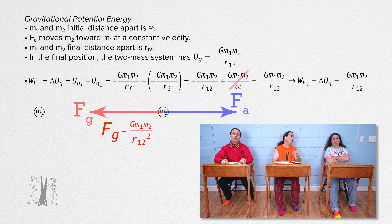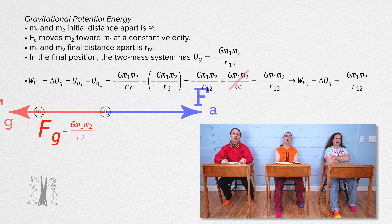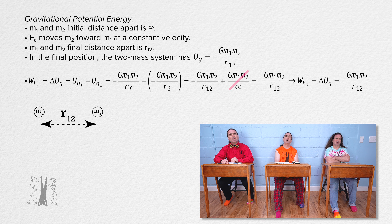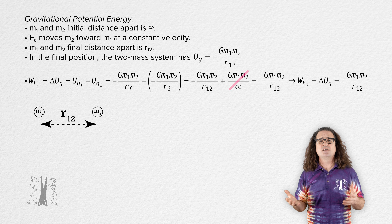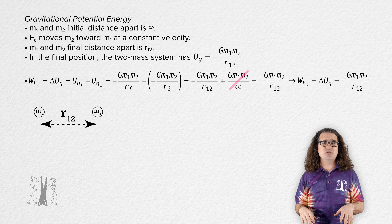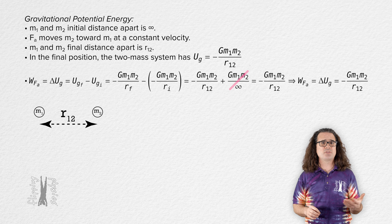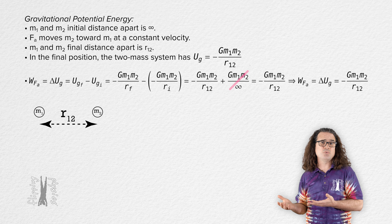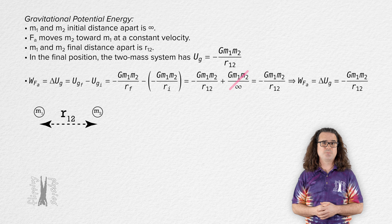Student: But why is the gravitational potential energy zero when the two masses are infinitely far apart? Teacher: That is how gravitational potential energy is defined. As a scientific community, we have decided to identify the location where the gravitational potential energy for a two point mass system equals zero as when the two point masses are infinitely far from one another.